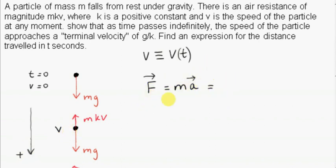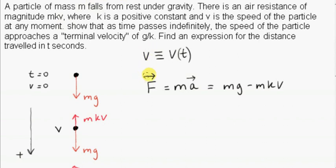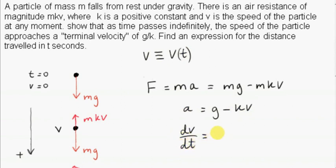We consider the vector equation: the force mg is positive and the resistance force mkv is negative. Since mg is always greater than mkv — mkv starts at zero and grows until it reaches mg — the result is always positive. Dividing by m gives the acceleration. Writing acceleration as dv/dt gives us our separable differential equation.